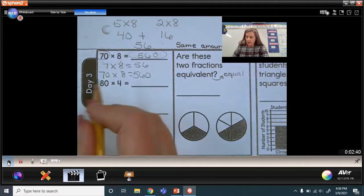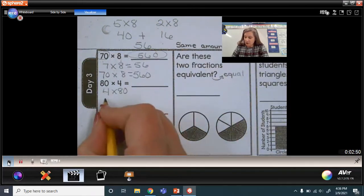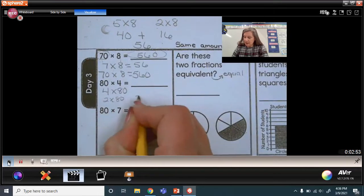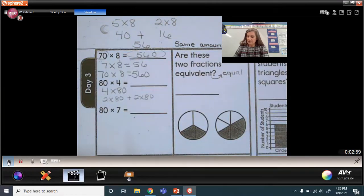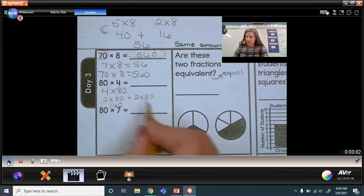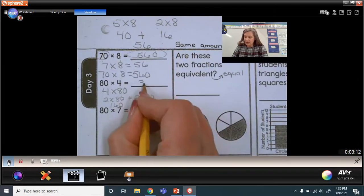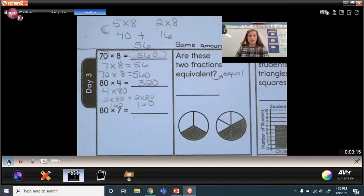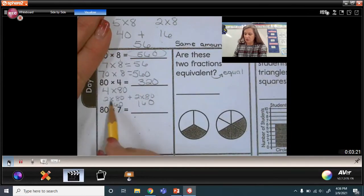Now, if I did 4 times 80 or 80 times 4, remember you can switch your factors because that's what the order property tells me. I could have 2 groups of 80 and another 2 groups of 80. Well, what is 80 plus 80? 160. And 2 groups of 80 is 160. And 160 and 160, if you said 320, you'd be correct.